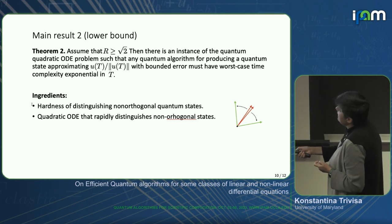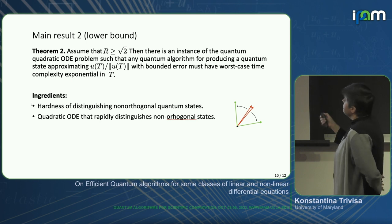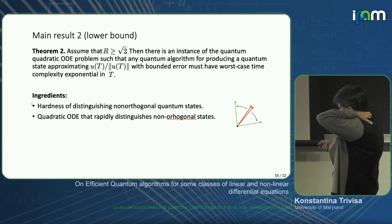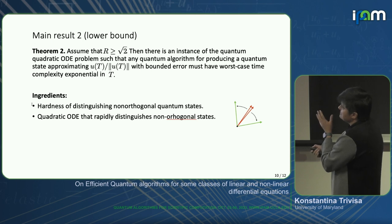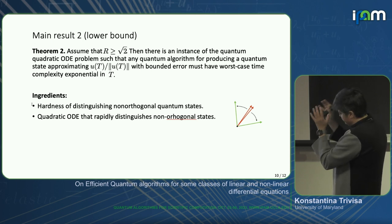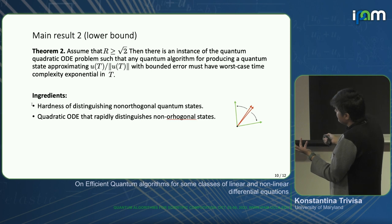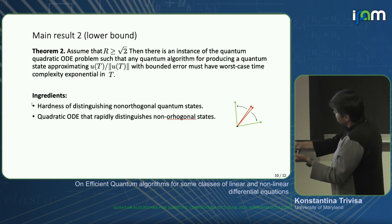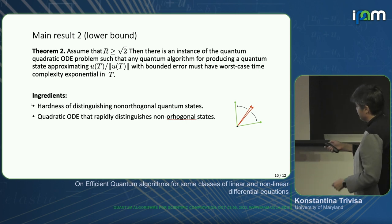The ingredients for the hardness result use the so-called hardness of distinguishing non-orthogonal quantum states. We constructed an ODE example: we considered two vectors that are very close to each other, applied the dynamical system on both sides of a qubit, and checked what happens. We designed quadratic ODEs that rapidly distinguish non-orthogonal states — showing that the algorithm breaks down in this regime.